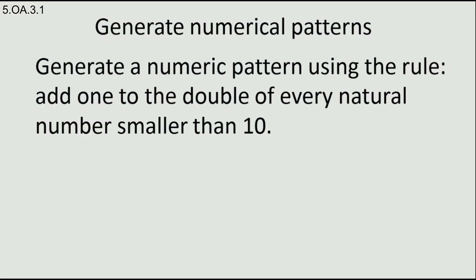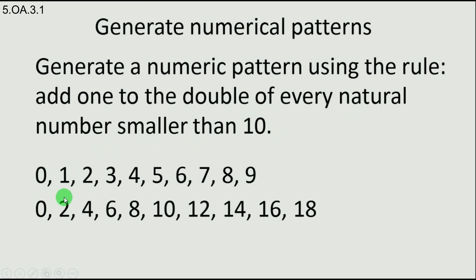Generate a numeric pattern using the rule: add one to the double of every natural number smaller than 10. First, we have to find all the natural numbers smaller than 10. Here they are. Then we have to find the double of every natural number smaller than 10. That's easy. Double of zero is zero, double of one is two, double of two is four, and so on. Next, we have to add one to the double of every natural number smaller than 10. So we have to add one to the numbers we already found. One plus zero is one, one plus two is three, one plus four is five. This way we found our pattern.